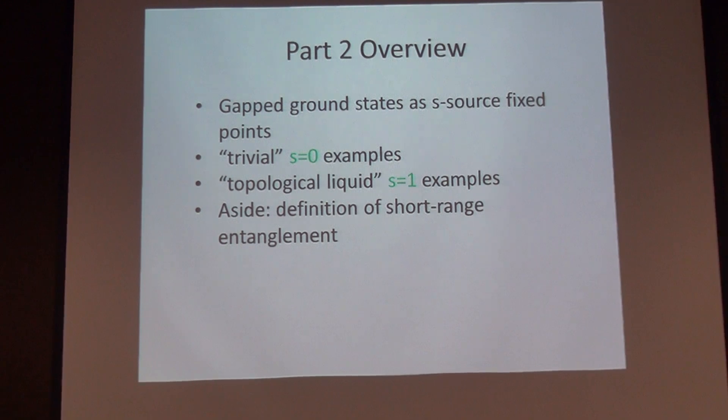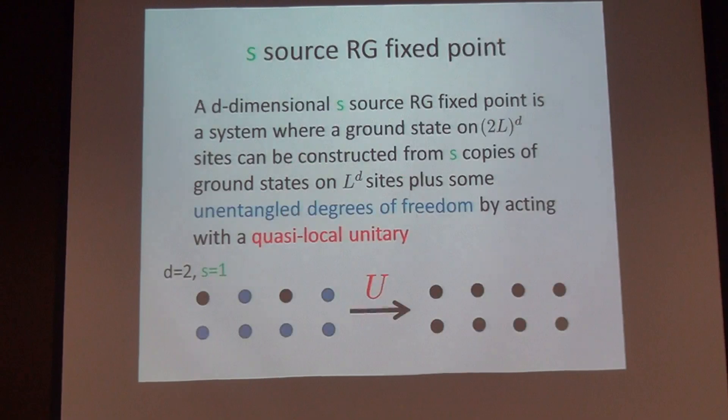Here's the definition again: it's an s-source fixed point in d dimensions if I can take the wave function on size L, take s copies of it, throw in some product states, mix them all together and produce the wave function on size 2L. That's the definition and so the goal will be to construct the unitary U.